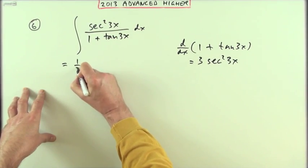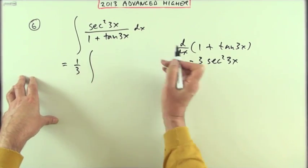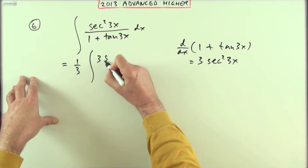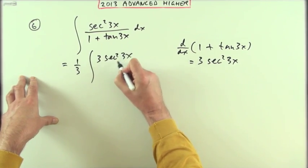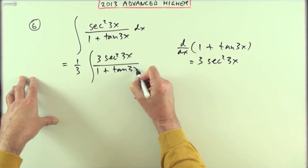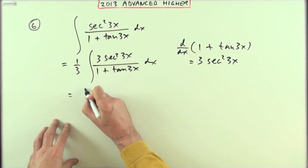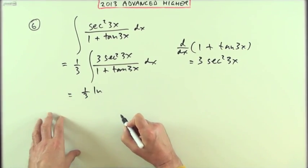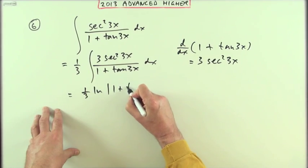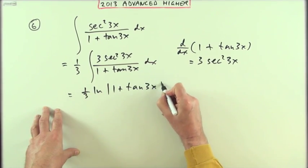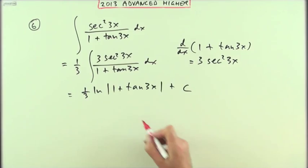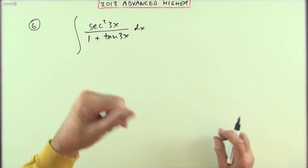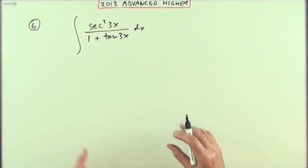So by just having sec squared, I've got one third of the integral of, just to spell it all out, of 3 sec squared 3x over 1 plus tan 3x dx. So I've just got one third of the logarithm of 1 plus tan 3x plus c.